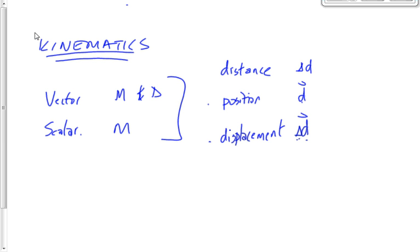Let's say I start two meters north of the wall and walk five meters. My distance traveled is five meters. My initial position was two meters north, and my final position is seven meters north. My displacement is five meters to the north — final minus initial: seven minus two equals five.